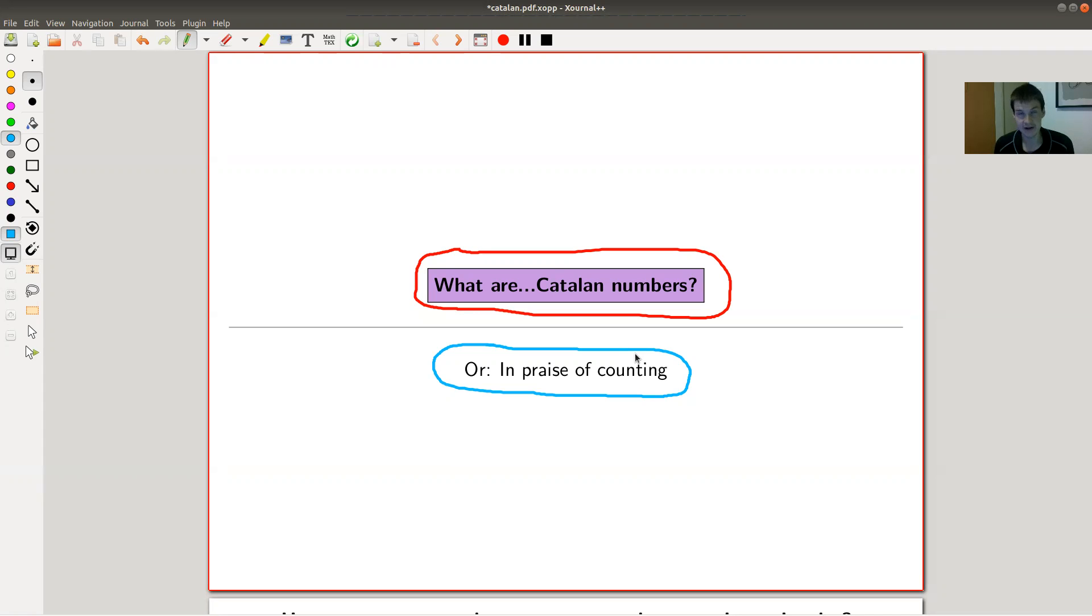I would go as far as saying, whenever you have a counting problem, you should first check with the Catalan numbers, whether you're actually counting the same thing as the Catalan numbers. So very, very many different things. It's one of the most prominent sequences of numbers in mathematics altogether and combinatorics and real life, whatever. We won't see real life today, but I'm pretty sure that Catalan numbers also count something in real life. They just count everything.